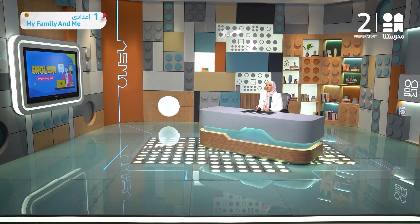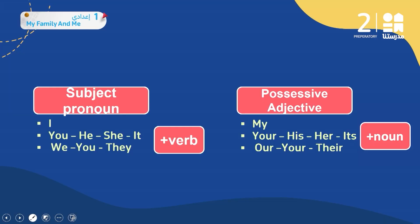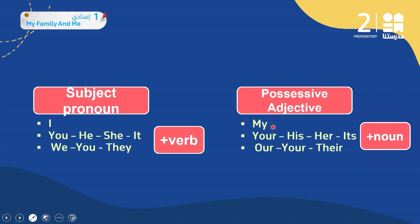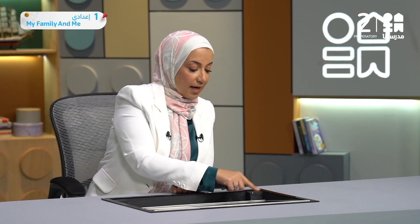In the text we have read, we have many pronouns and adjectives. We have subject pronouns like I, you, he, she, it, we, and they — we use the verb after these pronouns. We also have possessive adjectives like my, your, his, her, its, our, and their — and we use a noun after them.